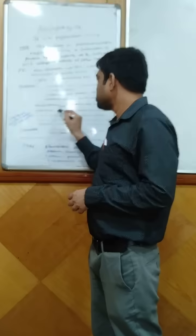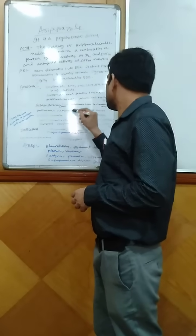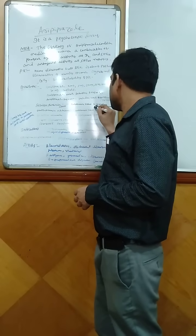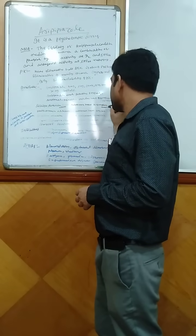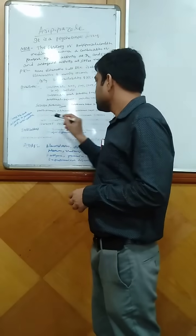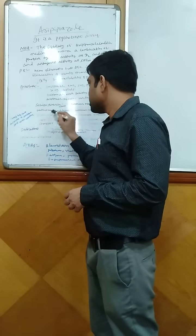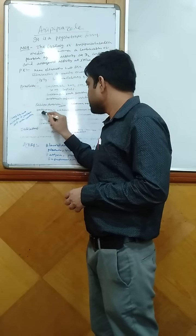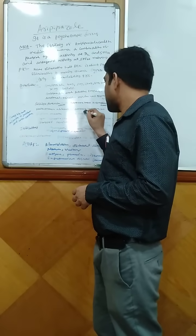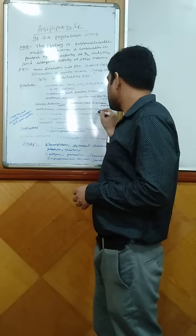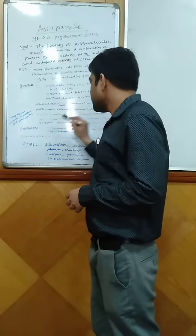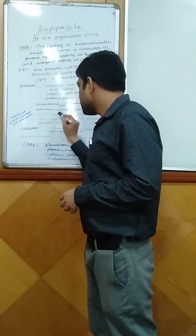Coming to the dose: in schizophrenia in adults, the dose is REP prazel tablet 10 to 15mg per day, maximum dose 30mg per day. In schizophrenia adolescents, the dose is REP prazel tablet 2mg per day, maximum dose 30mg per day.